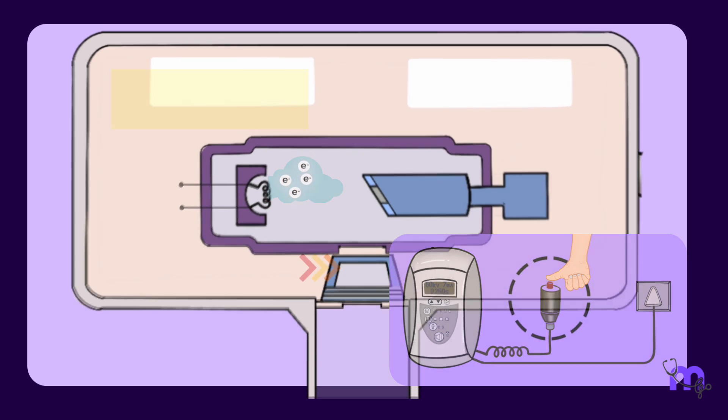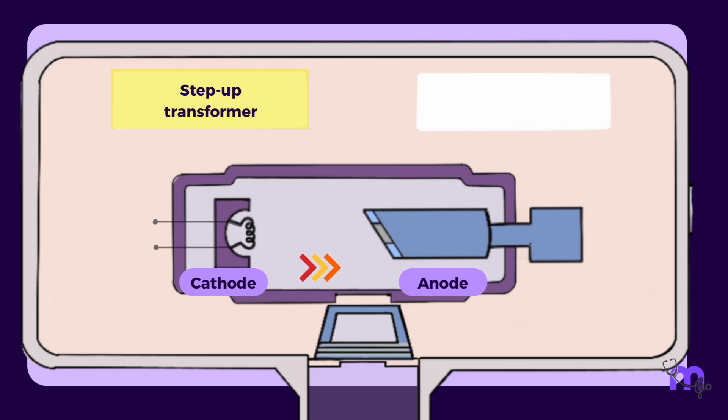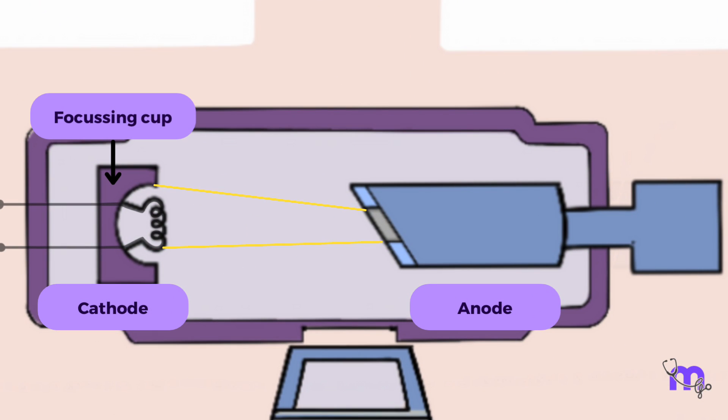Once the exposure button is pushed, the step-up transformer raises the current voltage from 110 to 220 to 65,000 to 100,000 volts, causing the electron cloud to accelerate across the tube to the anode. Here the molybdenum focusing cup helps stream the electrons towards the focal spot.